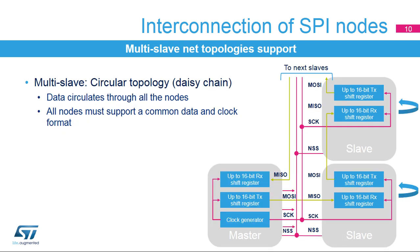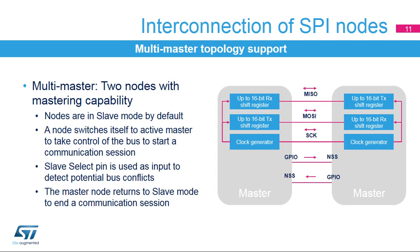Another multi-slave configuration is the circular topology, where the inputs and outputs of all the nodes are connected together in a closed serial chain. A common slave select signal is used for all the nodes as communication occurs at the same time. All nodes must have the same data and clock format configuration. Microcontroller SPI nodes typically use separate internal transmit and receive shift registers, so the data transferred between them has to be handled by software in a circular mode.